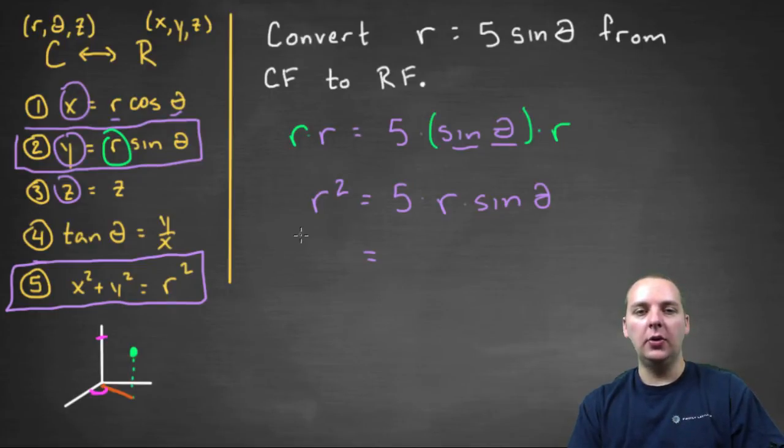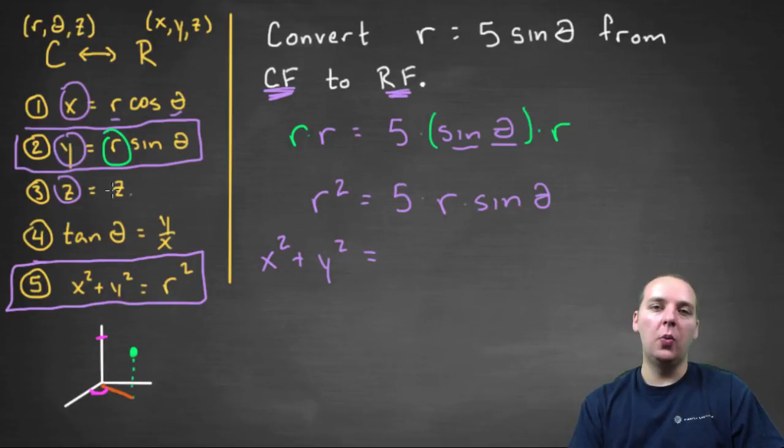So the r squared will convert that from cylindrical form to rectangular form by calling it not r squared, but by calling it x squared plus y squared. And the right hand side, the r sine theta can be converted to a y,